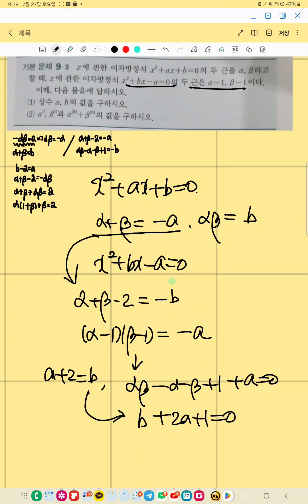We can solve this simultaneous equation. So A is negative 1 and B equals 1.